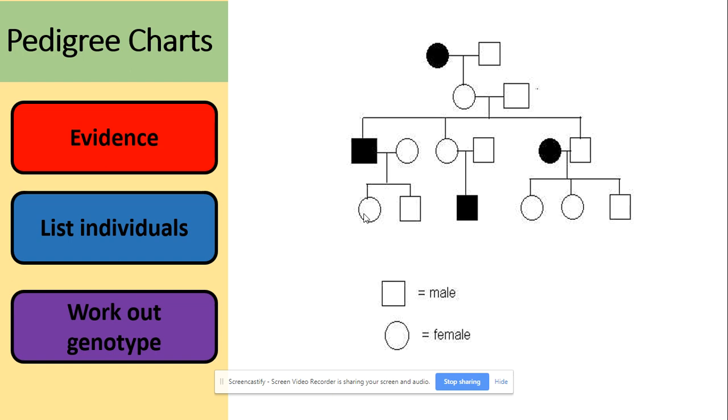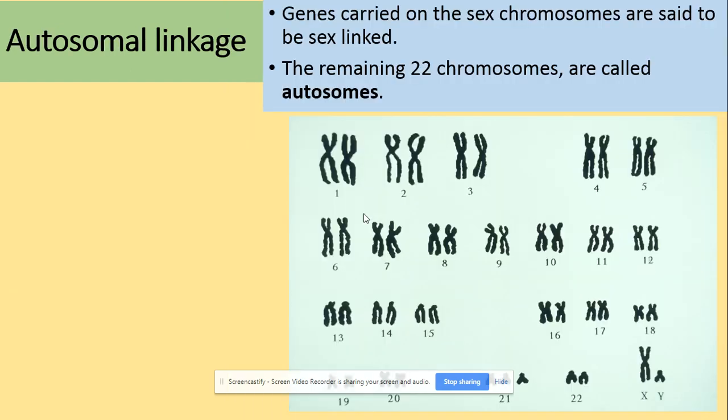If he is unhealthy, that means that this female here definitely will be a carrier because one of the X chromosomes comes from dad and the other one will come from mom. That could be a little bit of help with working out the genotypes from the pedigree charts.